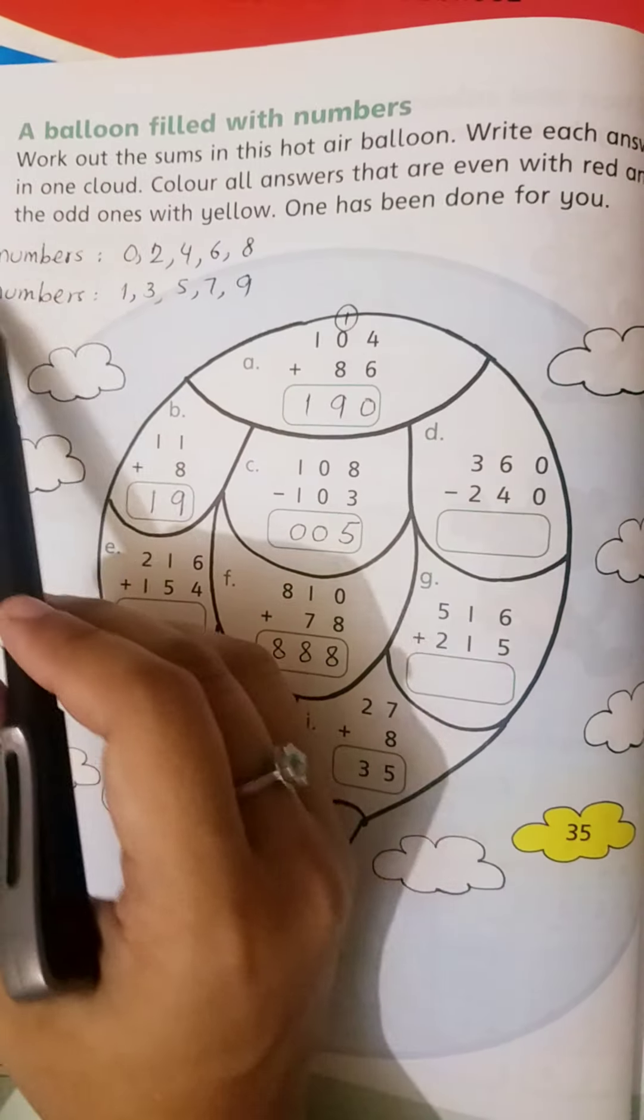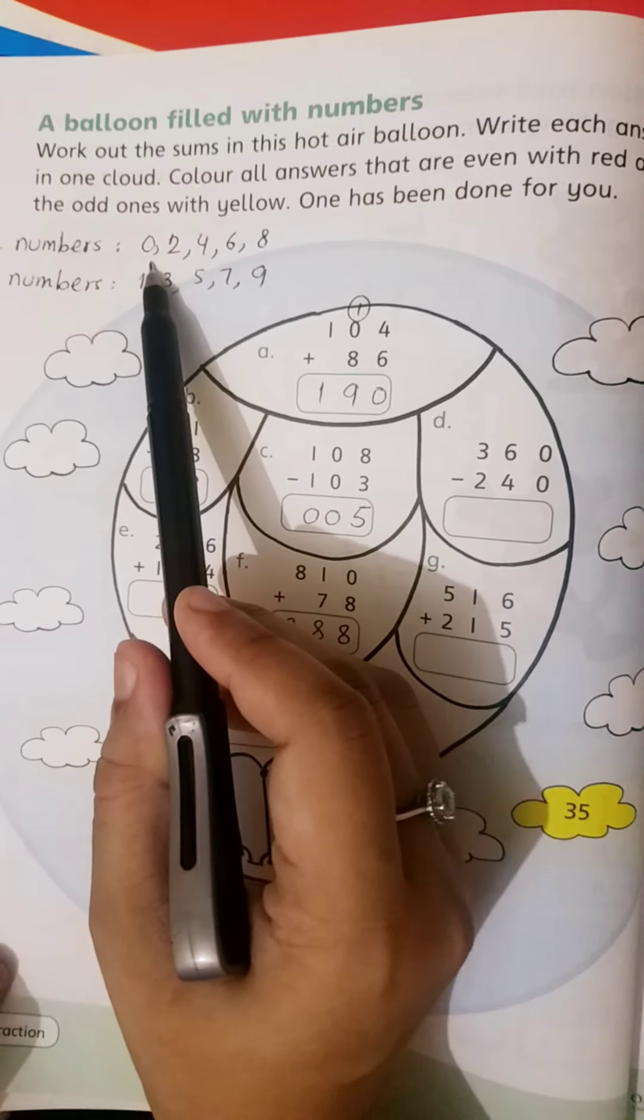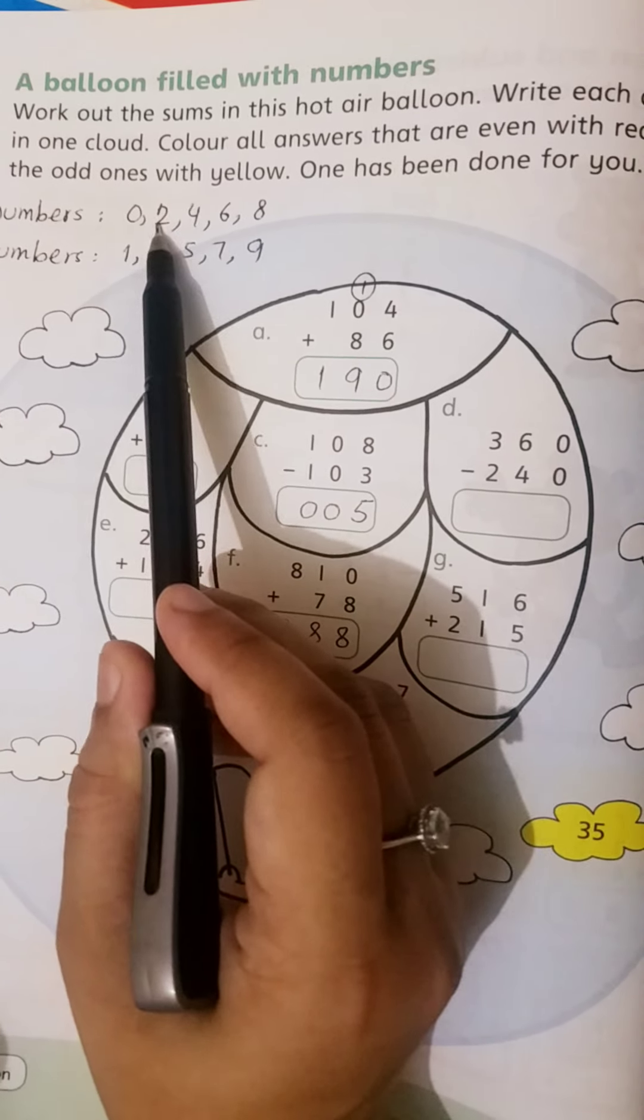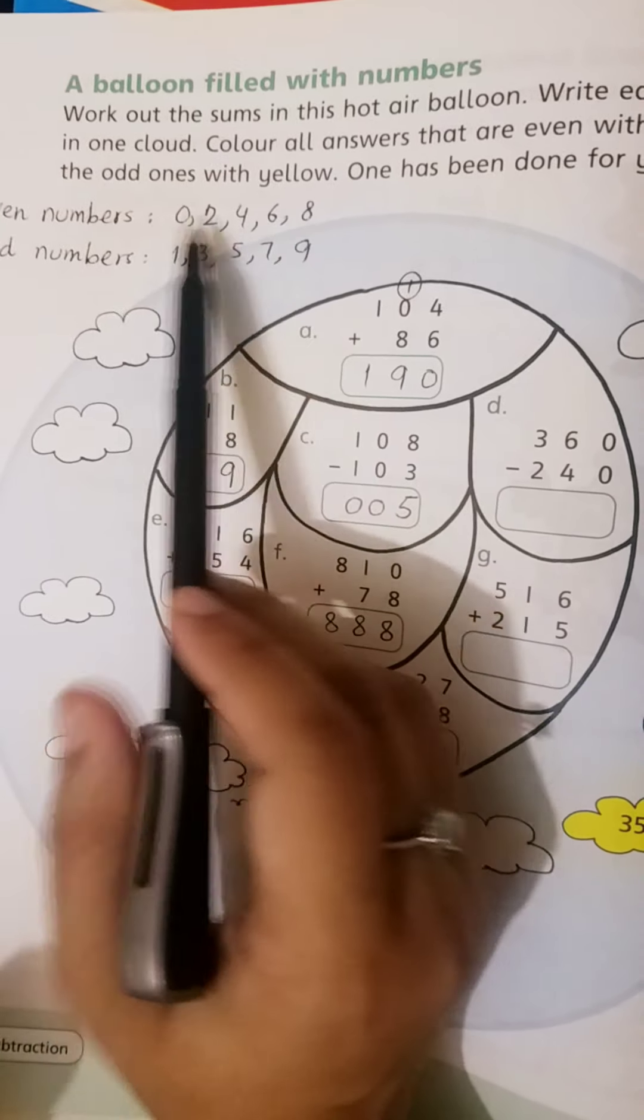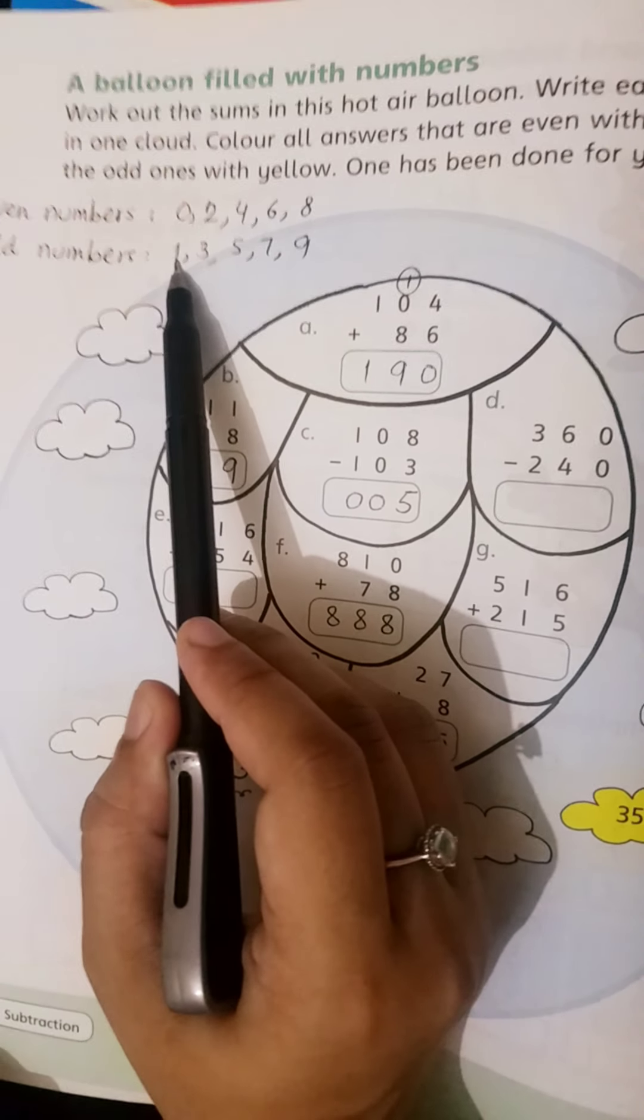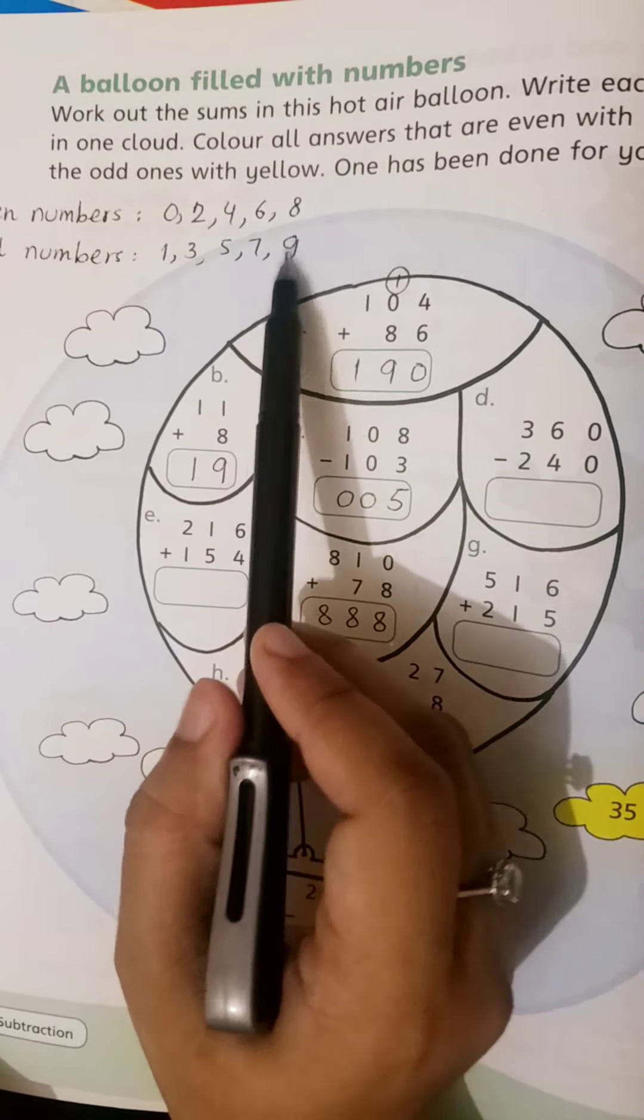Now check. Even numbers are those which have 0, 2, 4, 6, or 8 in the unit place or once place. Odd numbers are those which have 1, 3, 5, 7, or 9 in the last place.